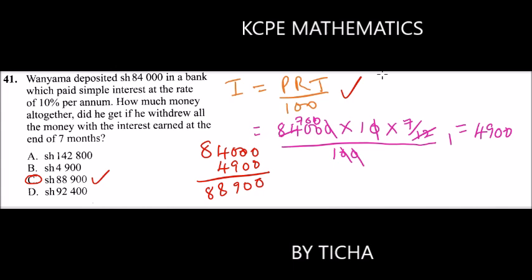Wanyama did not wait for the end of the year to get his money. If he had waited for the end of the year, he would have got 10%. That's how you do that question.